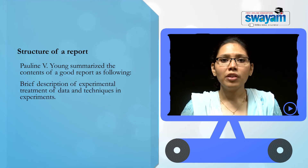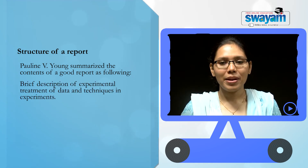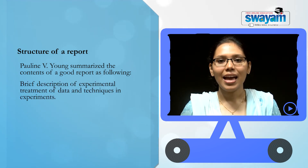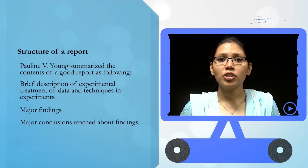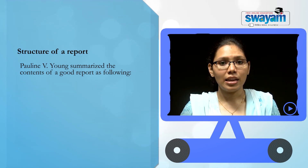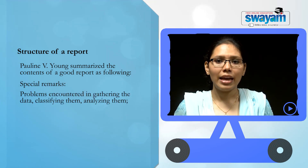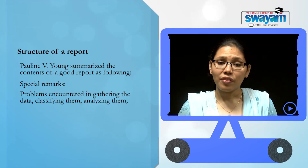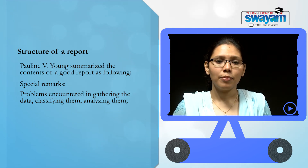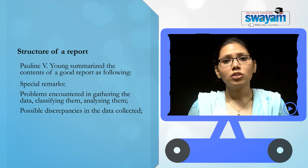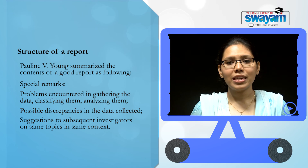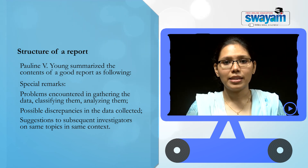Fifth, a brief description of experimental treatment of data and techniques in experiments. Sixth, the major findings. Seventh, major conclusions reached about the findings. Eighth, special remarks — for example, problems encountered in gathering the data, classifying them, analyzing them, possible discrepancies in the data collected, and suggestions to subsequent investigators on the same topic in the same context.